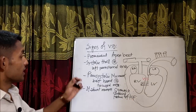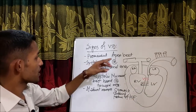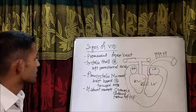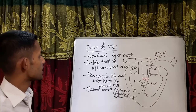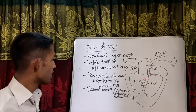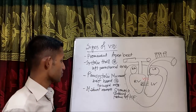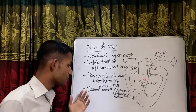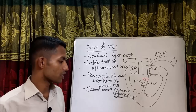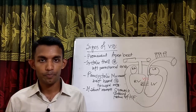In case of the signs of VSD, there is a prominent apex beat, systolic thrill at the left parasternal area, pansystolic murmur based at the tricuspid area. And if the shunt reverses, there is central cyanosis, clubbing, and features of heart failure.